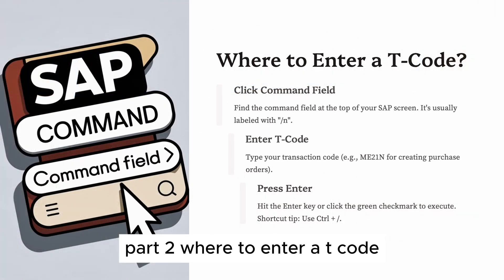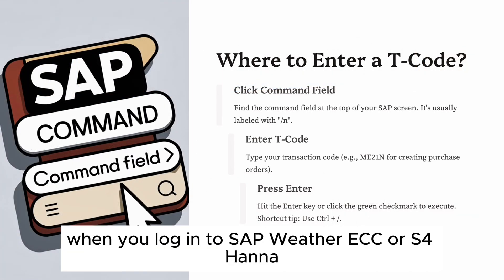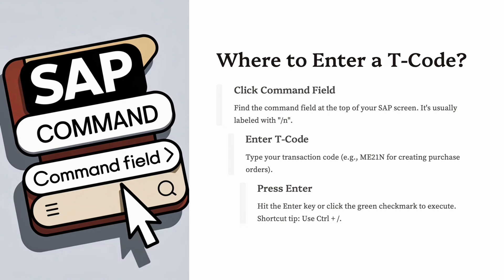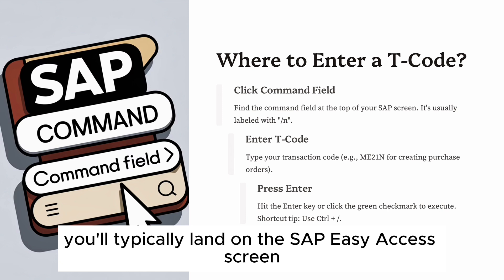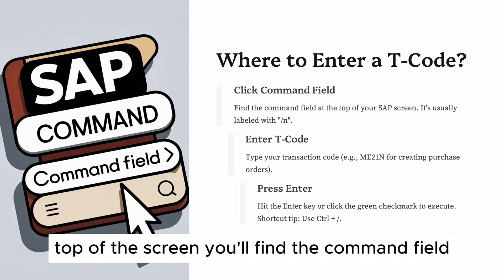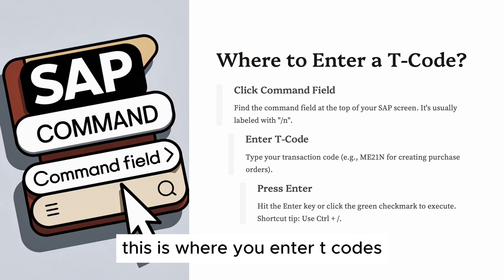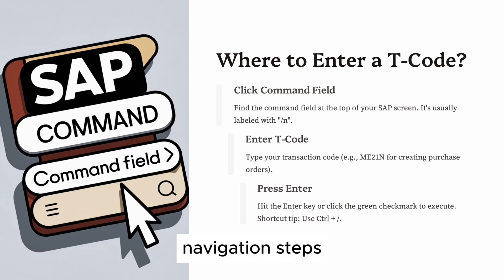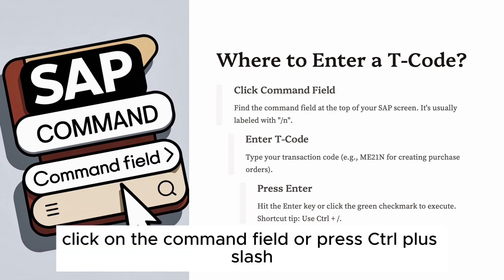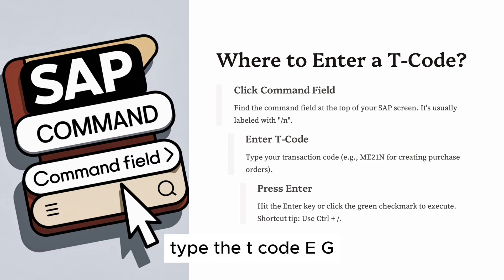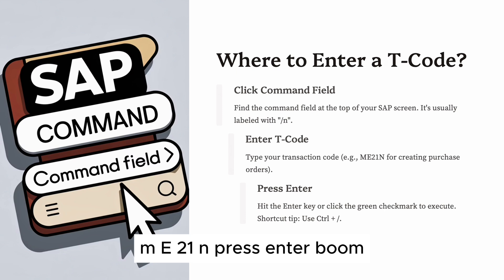Part 2: Where to enter a T code. When you log in to SAP — whether ECC or S/4 HANA — you'll typically land on the SAP Easy Access screen. At the top of the screen, you'll find the command field. Click on the command field, type the T code (e.g., ME21N), and press Enter — boom, you're there.